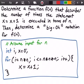Hey guys, welcome to this video on algorithm analysis. In this video we want to determine a function that we're going to call f(n) that describes the number of times the statement x equals x plus 1 is executed in terms of n. Then we're going to determine a Big O notation for our function f(n).